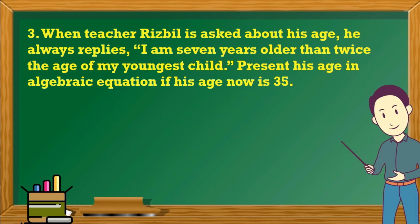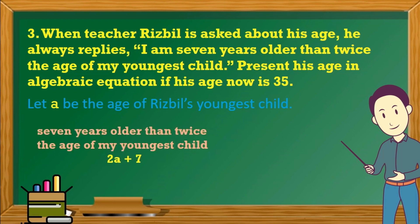Sample problem. When teacher Riesbill is asked about his age, he always replies: I am seven years older than twice the age of my youngest child. So, let A be the age of Riesbill's youngest child. That's 2A plus 7 is equal to 35.